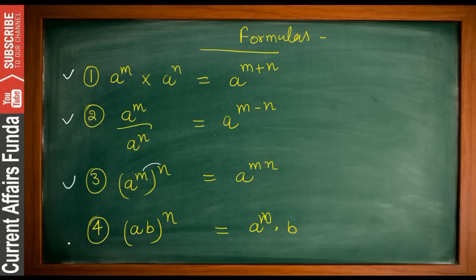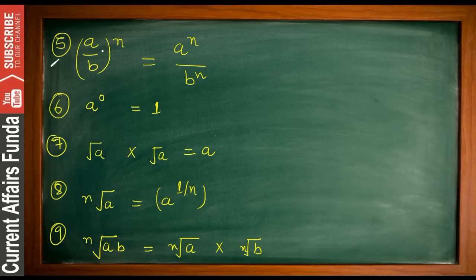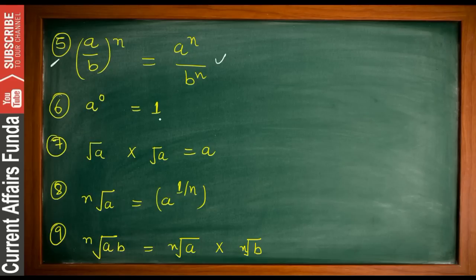Formula four: (ab)^n = a^n × b^n — the power is distributed individually to each factor. Formula five: (a/b)^n = a^n / b^n — the powers separate for numerator and denominator. Formula six: a^0 = 1 — if any term's power is zero, the answer is always one.